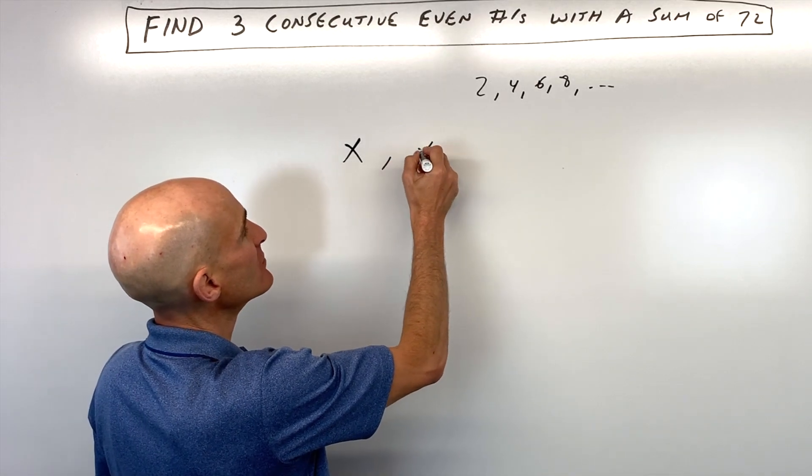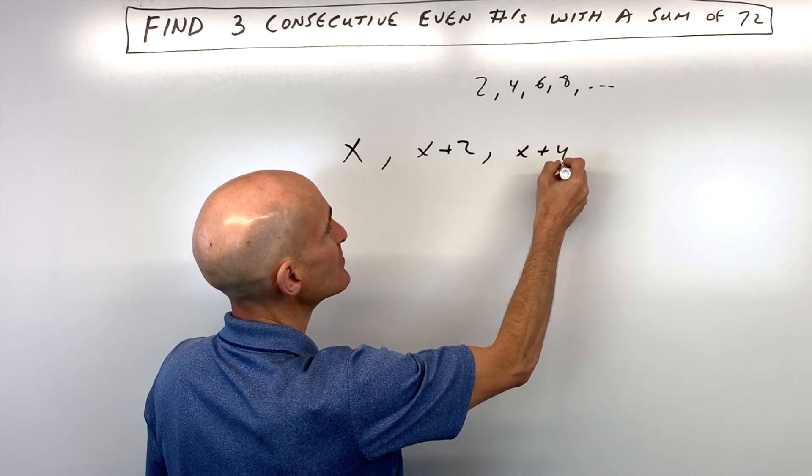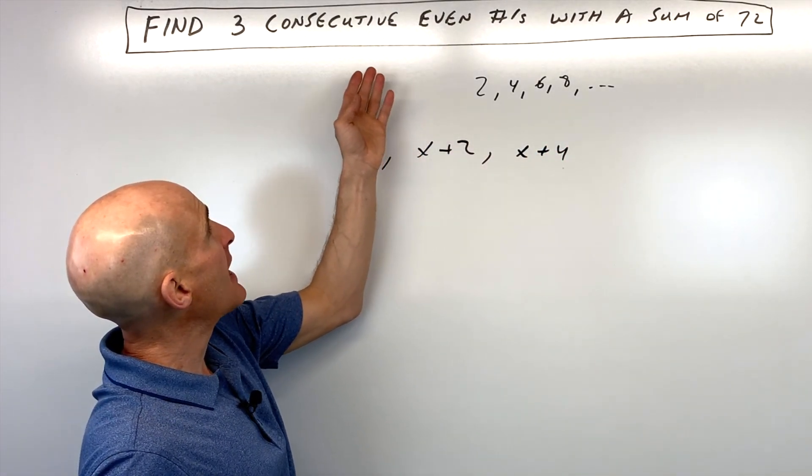The next consecutive even number is going to be 2 greater than this one. So that means the next number is going to be x plus 2, and the next number after that is going to be 2 greater. So if we add another 2, that's x plus 4.